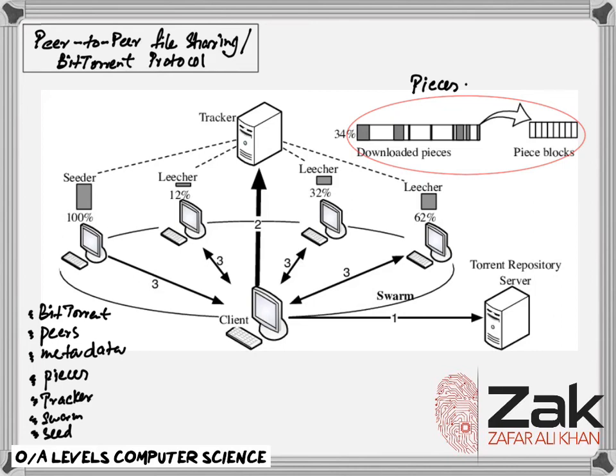Tracker. This is a central server that stores details about other computers that make up the swarm. It will store details about all the peers downloading and uploading files, allowing the peers to locate each other using the stored IP addresses.